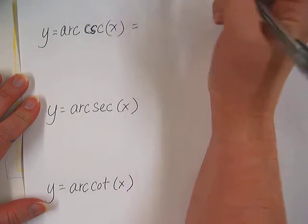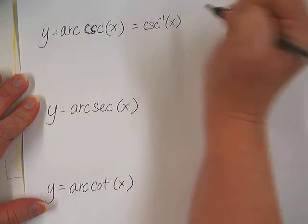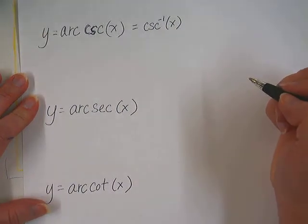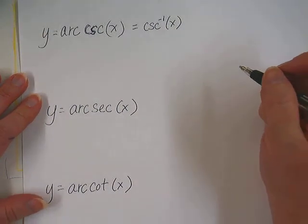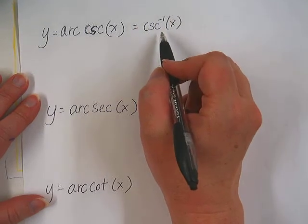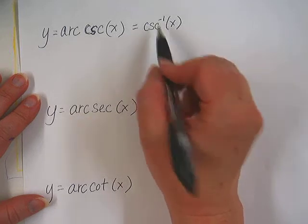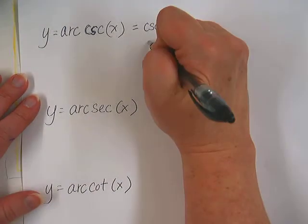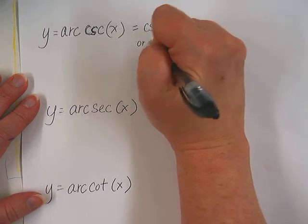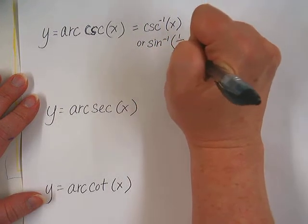Arc cosecant can also be rewritten as cosecant to the negative 1 of x. That's how it would look in some textbooks. But this notation isn't on the calculator like sine negative 1 is. So in order to do a problem like this in our calculator, we would actually need to type it in as sine negative 1 of 1 over the x value.